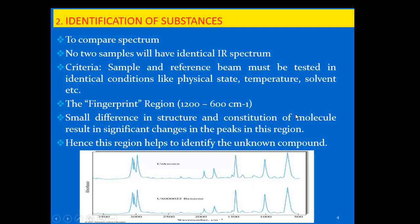The fingerprint region, from 1200 to 600 per centimeter, is very important because it is always different for each compound. Small differences in the structure of a molecule result in significant changes in the peaks in this region. For example, we ran benzene as a reference compound and compared it with an unknown sample. The unknown shows the same peaks in the fingerprint region, so we can confirm that the sample contains benzene.